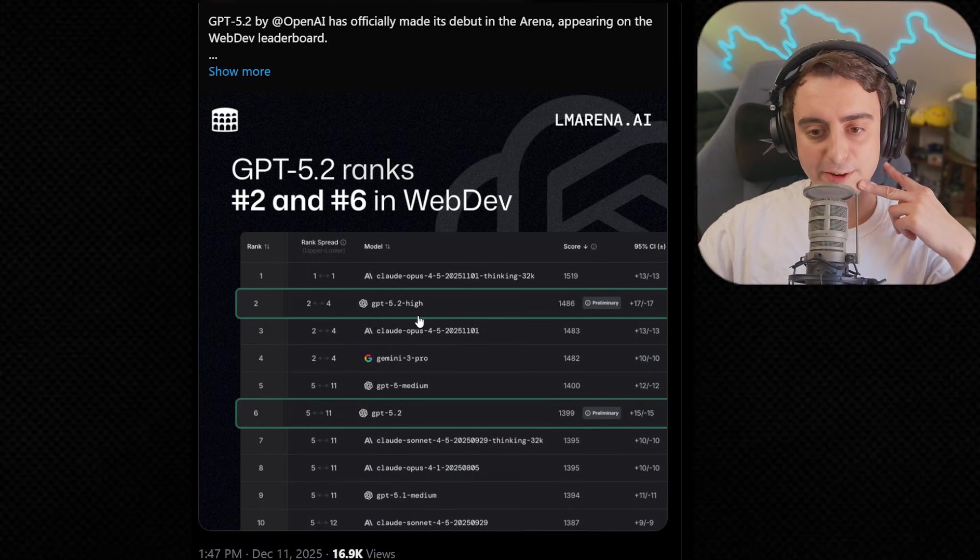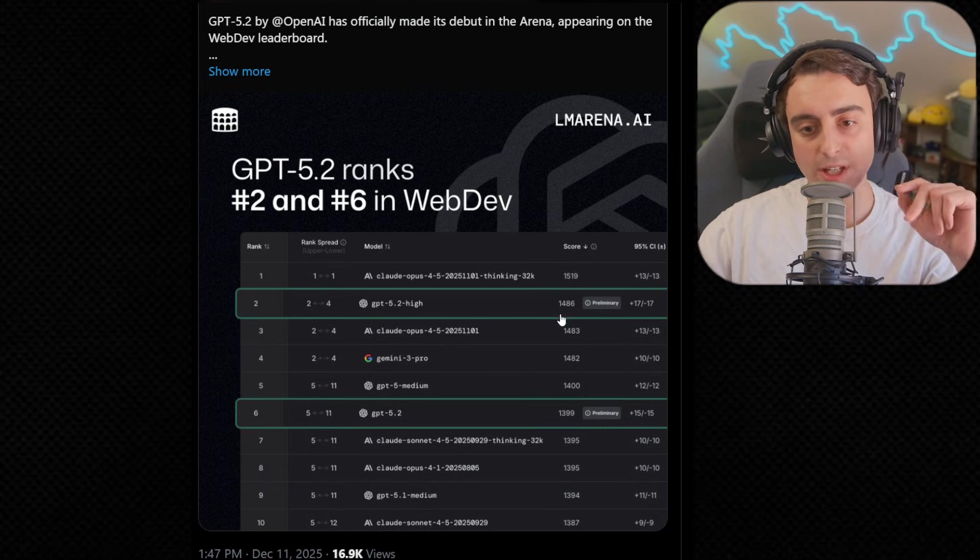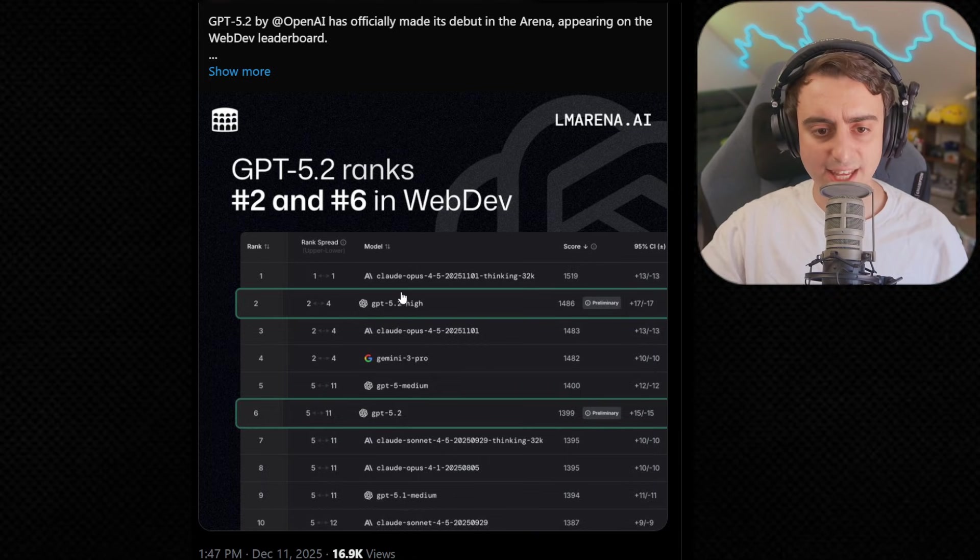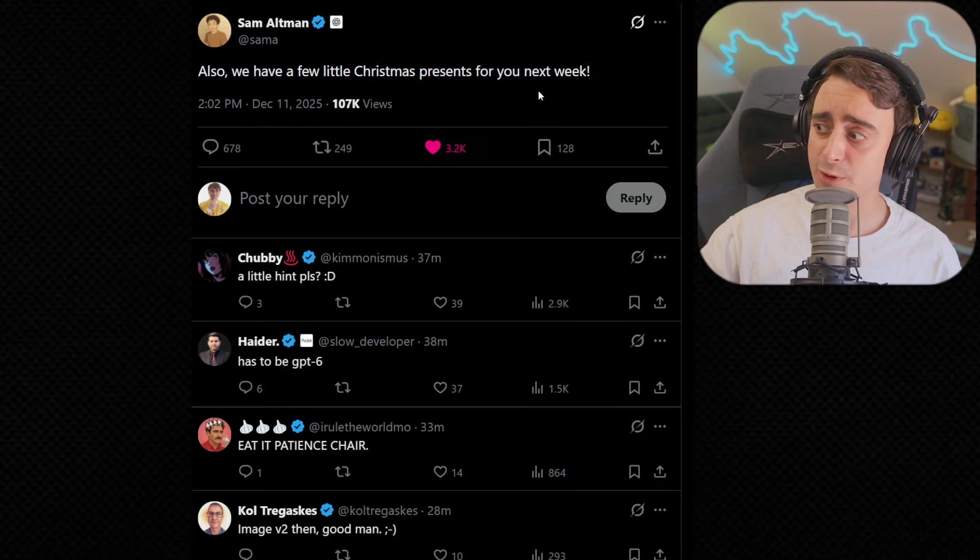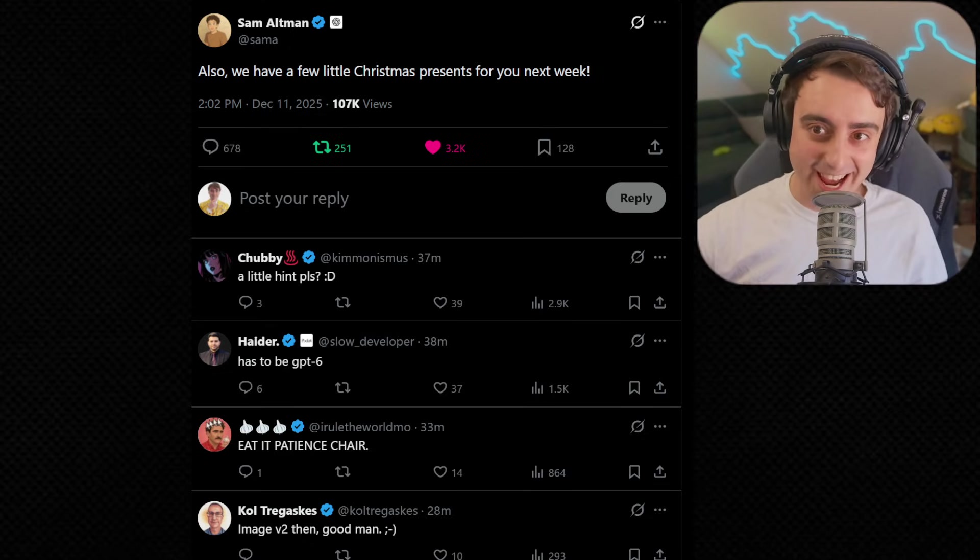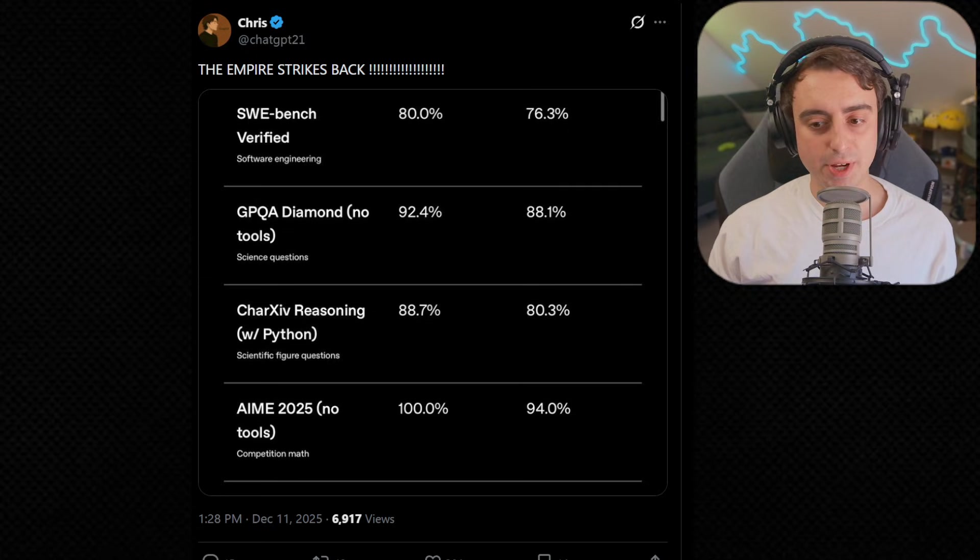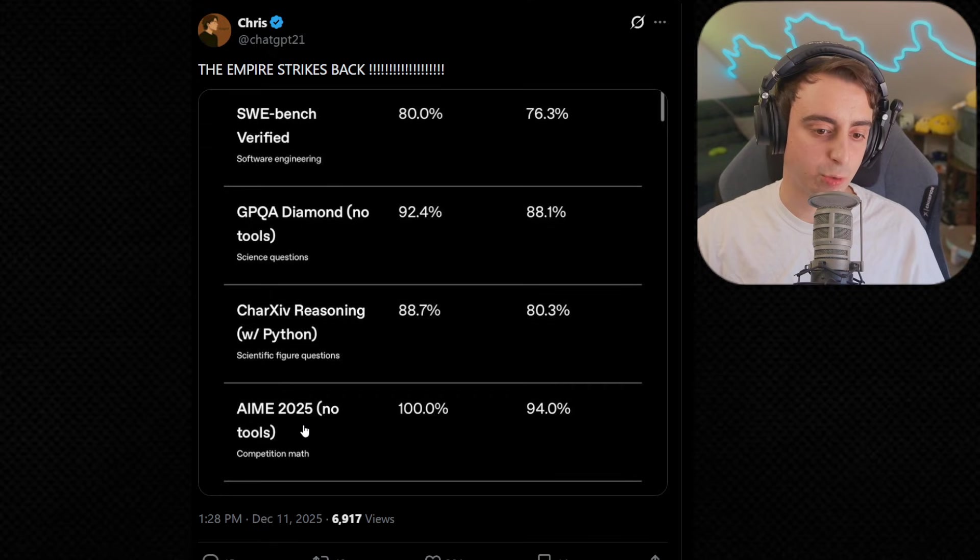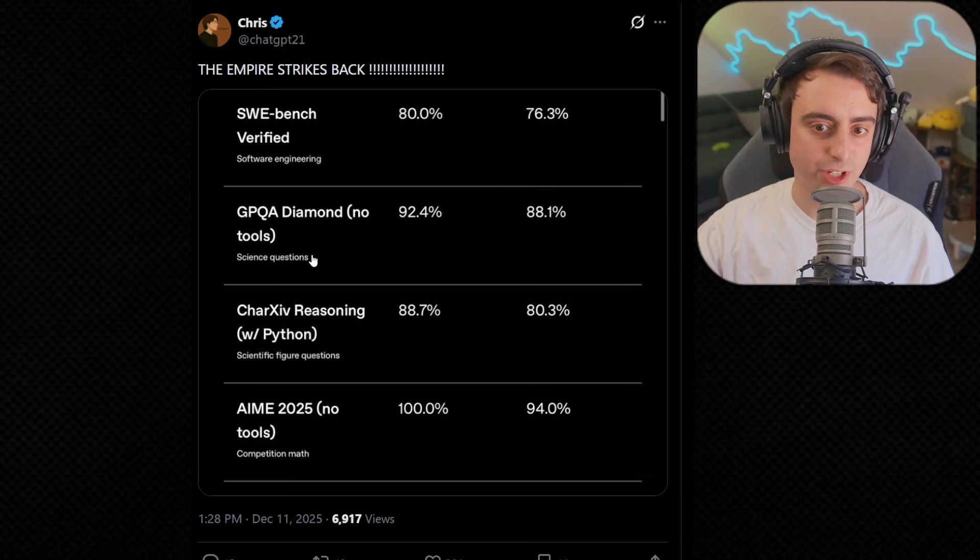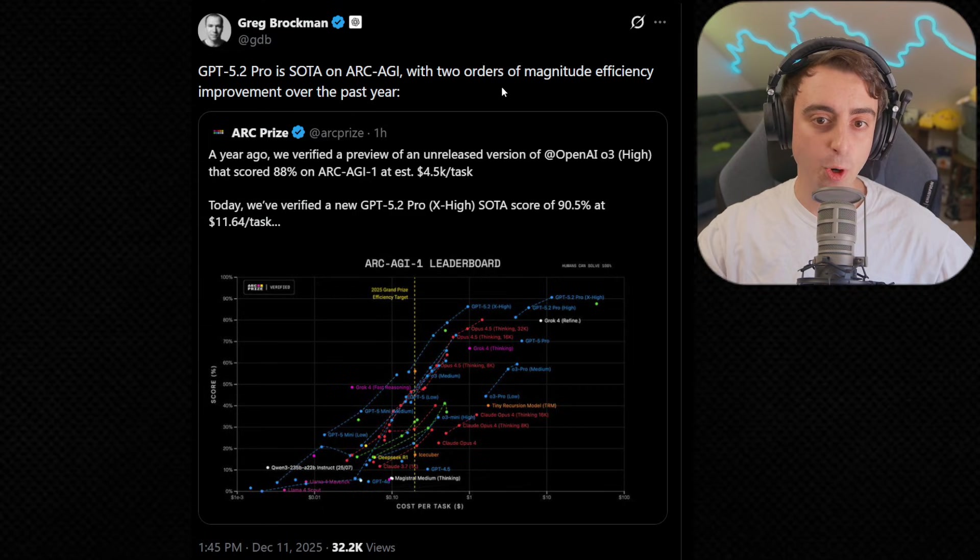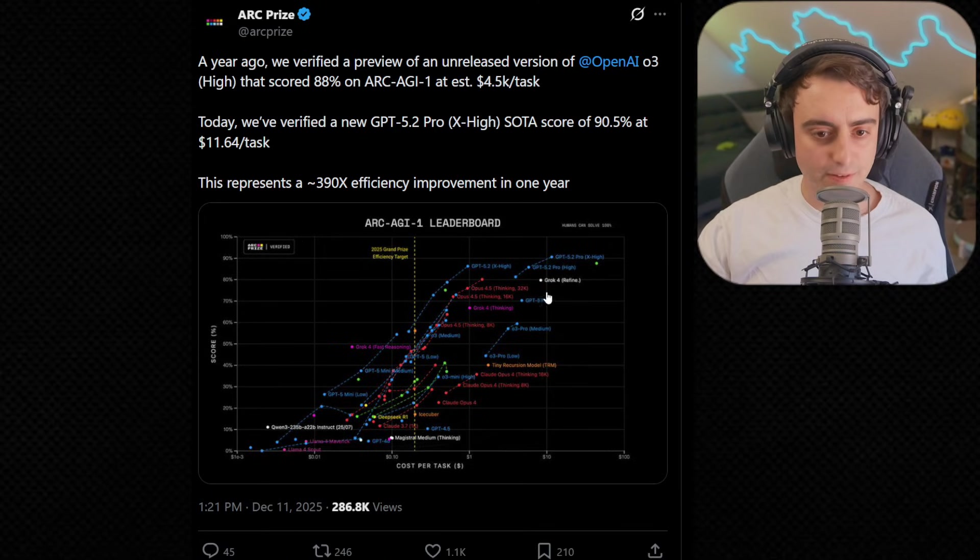In LM Arena, we can actually see GPT 5.2 High beating out Opus 4.5 and Gemini 3 Pro, but only by a few ELO points. The only one to actually beat GPT 5.2 with High Thinking is Claude Opus 4.5 with Thinking. Sam also says that there are a few little Christmas presents for us next week, which is exciting. My gosh, today has already been quite the day. As Chris points out, these benchmarks really do look good for 5.2. I was very skeptical. I didn't think that they would be able to compete with Gemini 3.